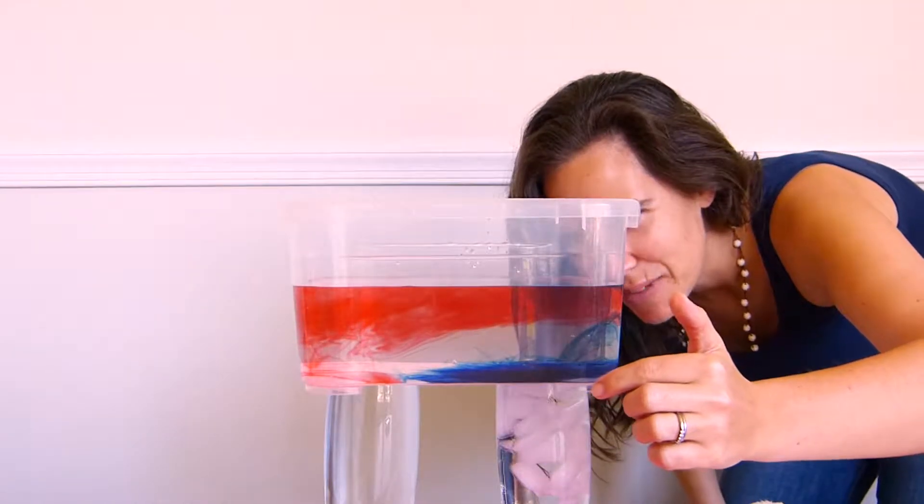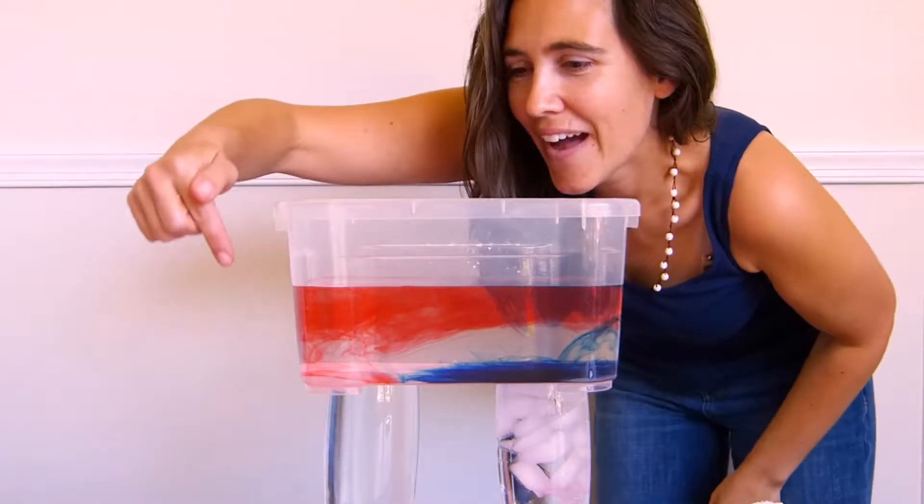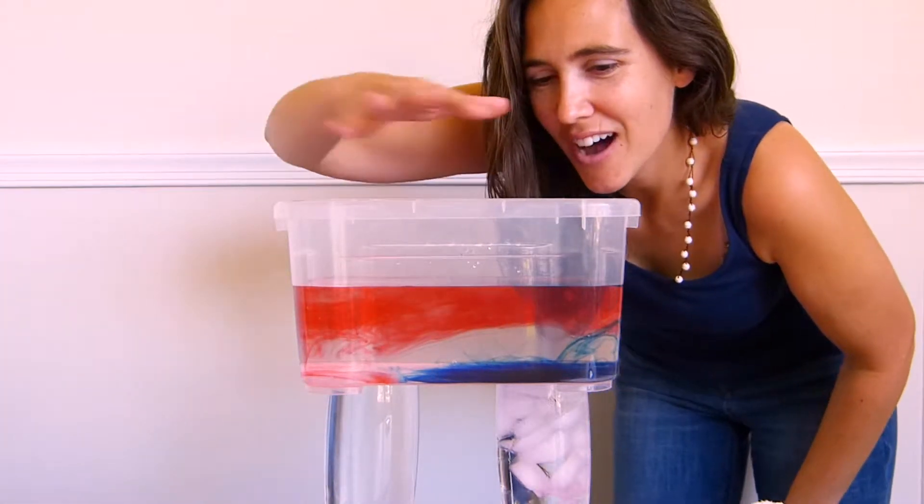The blue water is cold, look how it sank to the bottom and now it's just staying there in a big puddle. And the warm red water has risen up to the top and is spreading out.